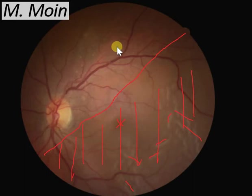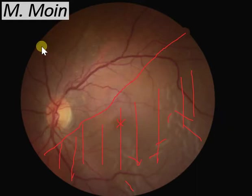The superior retina is attached. As discussed, this patient had recently removed silicone oil and was complaining of floaters in front of his superior field of vision — he could not see anything in his superior half of vision. That was his chief complaint.